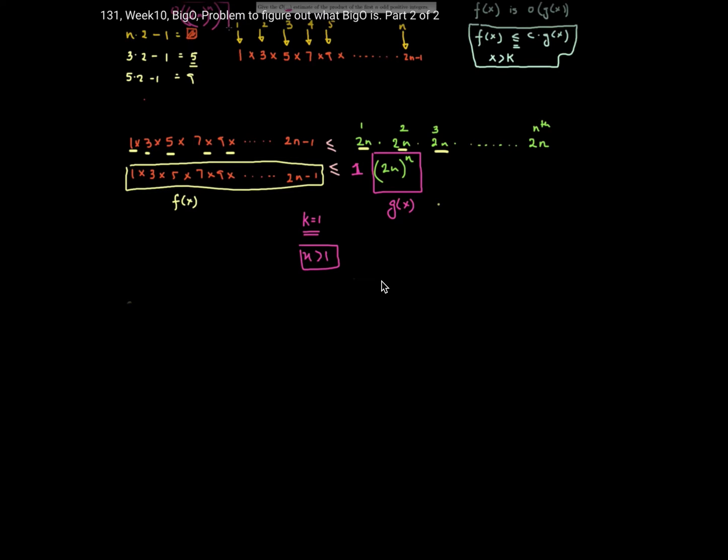In this video I'm going to provide a much tighter upper bound on the product of the first n odd positive integers.